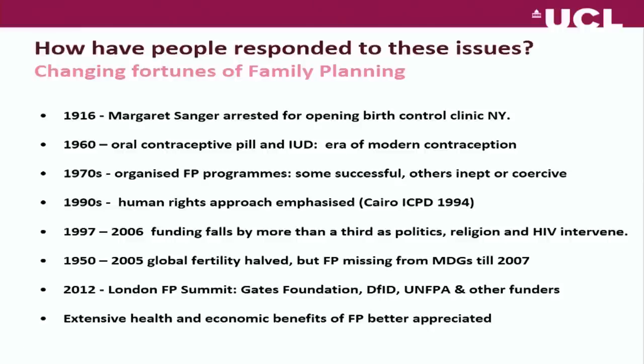One obvious way to influence population growth is through family planning, and this slide shows the changing fortunes of family planning. It didn't start well — in 1916 Margaret Sanger was arrested for opening the first birth control clinic in New York, and Marie Stopes, who opened the first birth clinic in London, had a tough time from the establishment too. Doctors wanted nothing to do with contraception, and the family planning service didn't become part of the NHS until 1974. But for the women who came flocking to these clinics, it was very different — they were desperate to prevent yet another unwanted pregnancy.